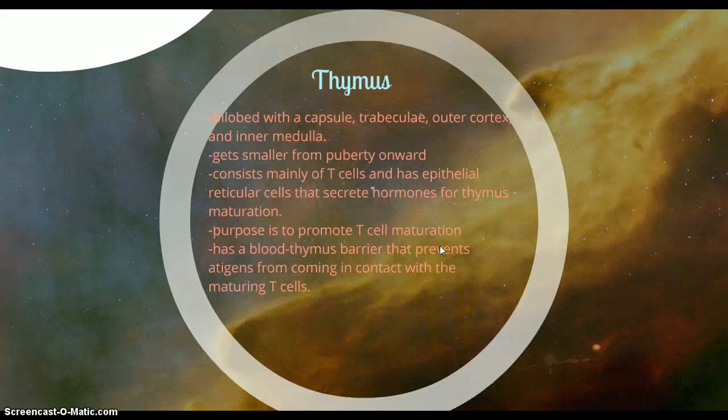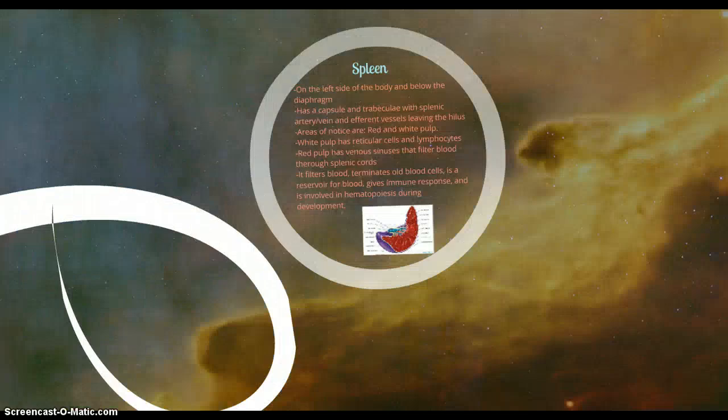Thymus starts with a T. Because it's only used for T cell maturation, it has a blood-thymus barrier. There are blood vessels surrounding your thymus, and that prevents pathogens from intruding, because your T cells need to mature before they can actually destroy those antigens. That blood-thymus barrier prevents antigens from coming into contact with the maturing cells.